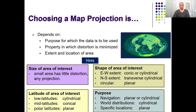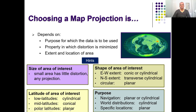Choosing a map projection depends on the purpose, the property you want to maintain, and the extent and location of the area. If you want to represent only a smaller part of the globe — maybe a county or a state — you can choose any projection. You can choose proper standard parallels and any projection you like. If you want to show the entire Earth, you need to think carefully. For low-latitude regions you choose cylindrical, for mid-latitude regions you choose conical, and for polar regions you choose planar.